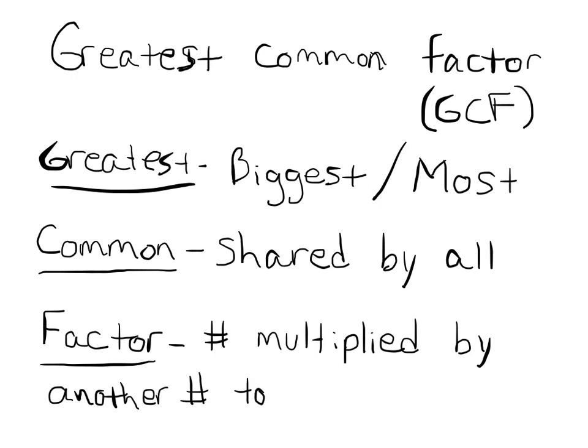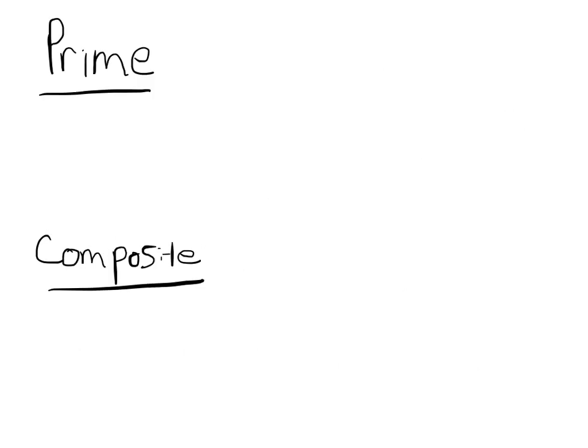A factor is a number multiplied by another number to get our target number. For example, if we think about the number 10, we could say 2 and 5 are both factors of 10, because we can multiply 2 by 5 to get 10. So factors of 10 are 2 and 5.